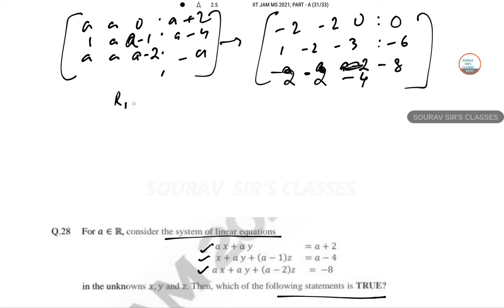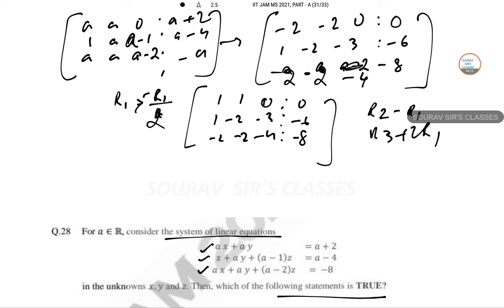If I do r1 equals r minus r1 by 2, so this will be 1, 1, 1, 0, 0, 0, 0, 1, minus 2, minus 3, minus 6. Nothing changes in row 2, and then r2 minus r1 and r3 plus 2r1.